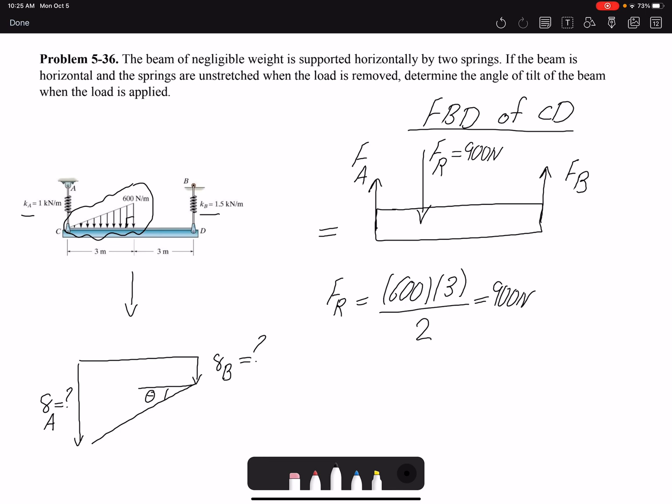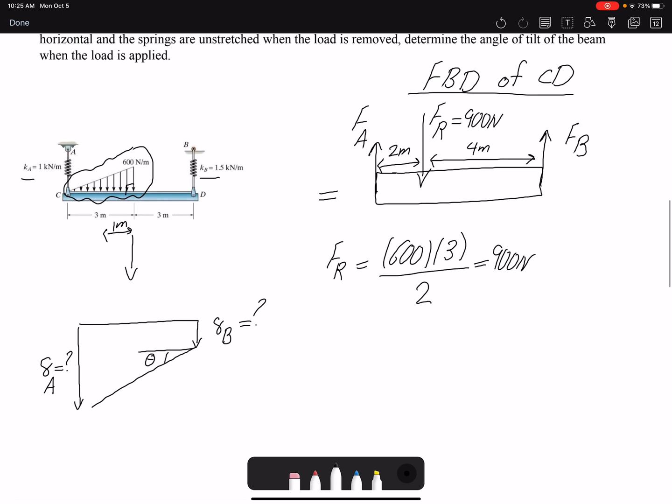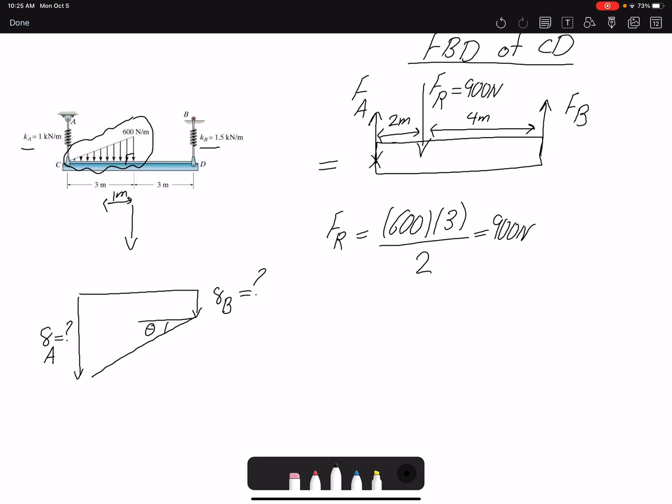The result of distributed loading is simply the area under the curve divided by 2, which gives me 900 Newtons acting one third of its length from the right side. So 1 meter from here, or 2 meters from this side. I can write summation of moments about point C and find Fb. Summation of moments about point C, counterclockwise positive: 900 is going to create a clockwise negative moment, moment arm is 2. Fb moment arm is 6, creating a positive moment equals zero.